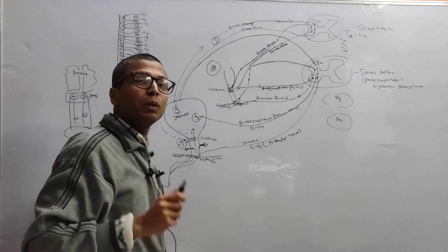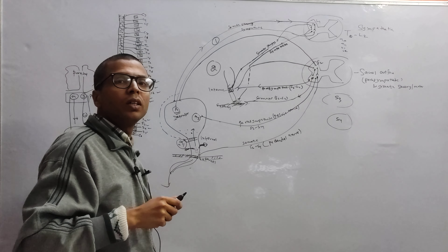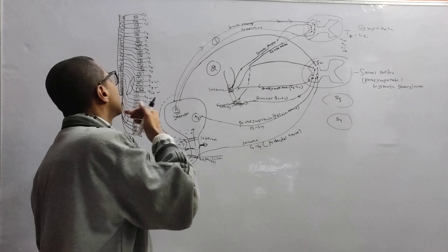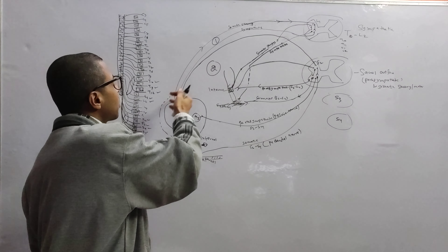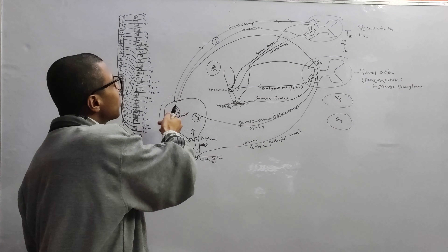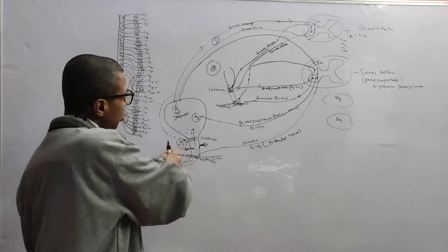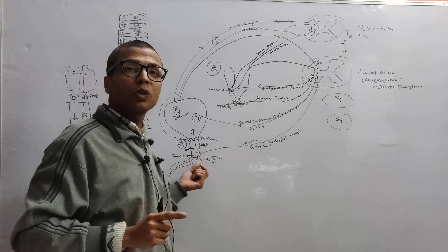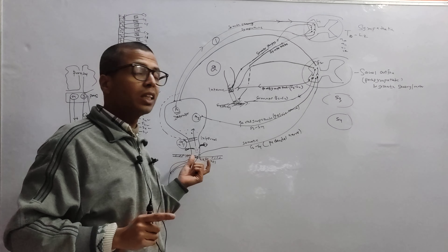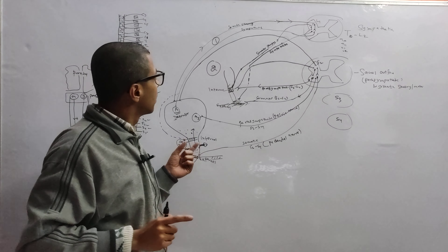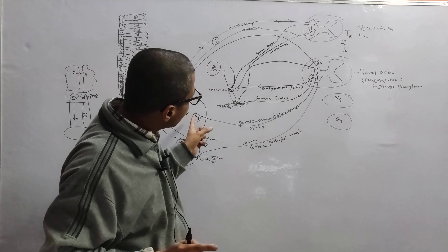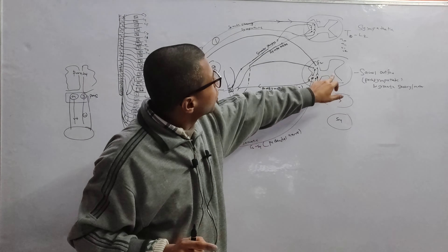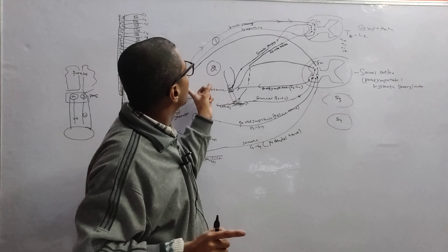Here I have drawn the somatic sensory supply going to T10, T11, L1, L2 levels. Somatic sensory information goes to all three levels — T10, T11, L1, L2 — and from these segments sympathetic supply also comes to the bladder.